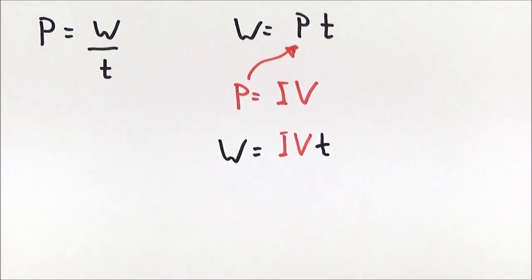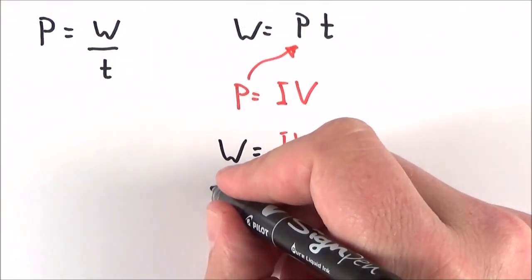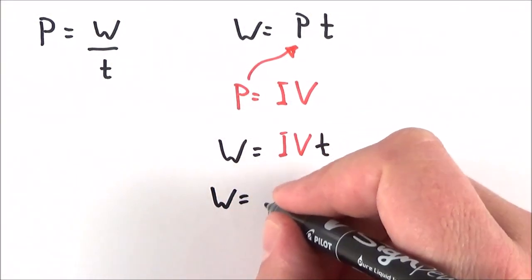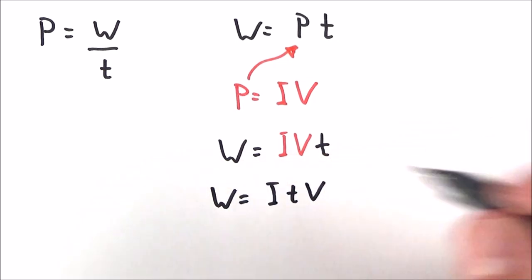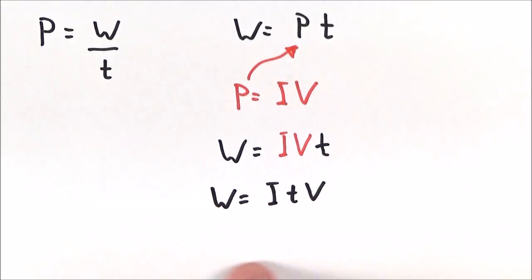Now that's not a particularly memorable way of remembering this equation, but we can also say that the energy transferred is equal to I T V. And if you remember this, you can then use this last equation to work out the energy which is transferred in electrical circuits.